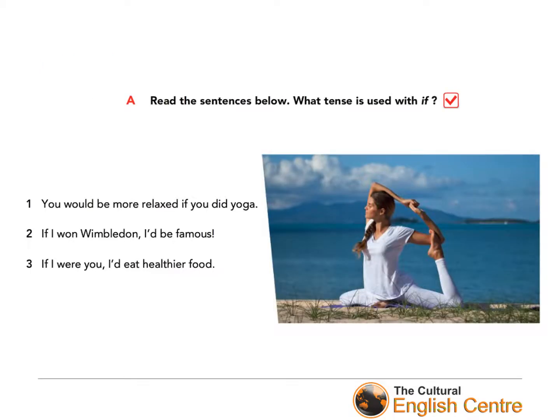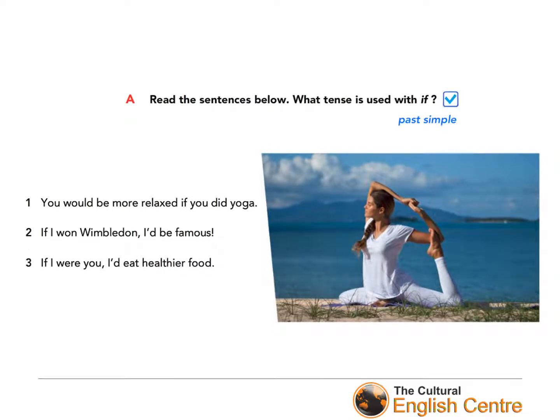Please now have a quick look at the exercises from your book — they're all on page 77. Open your books on page 77 and look at the blue part in exercise A. Read the sentences and decide what tense is used with 'if'. I'm sure you all know that here we are using past simple — in second conditional sentences, we always use a past tense after 'if'.